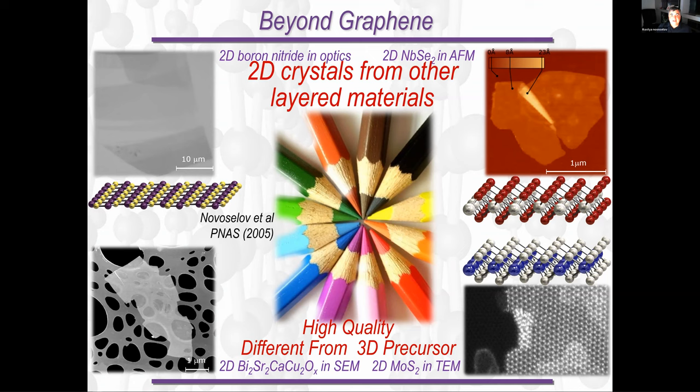You can exfoliate other layered materials and you get monolayers of other materials as well. Or there are actually other 2D crystals which can be grown directly without the three-dimensional precursor. Basically, these days we're talking about not only graphene, but a family of two-dimensional materials. They all have one thing in common - they're only one atom or one unit cell thick.